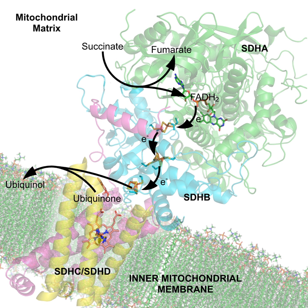A cofactor is a non-protein chemical compound or metallic ion that is required for an enzyme's activity. Cofactors can be considered helper molecules that assist in biochemical transformations. The rates at which these happen are characterized by enzyme kinetics. Cofactors can be subclassified as either inorganic ions or complex organic molecules called coenzymes, the latter of which is mostly derived from vitamins and other organic essential nutrients in small amounts.